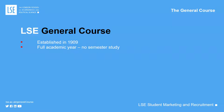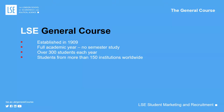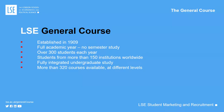Students join us on the General Course from all over the world — from 150 different institutions, many of them US institutions, though students are often international students already studying at a US institution. You're fully integrated into undergraduate study at the school: you'll be in exactly the same lectures and classes as regular degree-seeking LSE students, based in the same academic departments, using the same facilities, and living in the same accommodation.